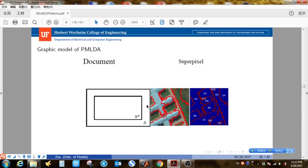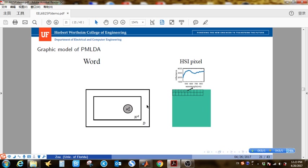So each hyperspectral image is assumed to be a corpus. Then the image is segmented to be some spatially continuous regions called superpixels. Each superpixel is a document in PM-LDA. Each pixel spectrum is a word.